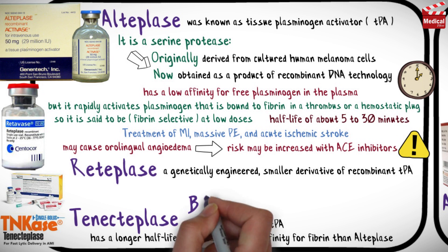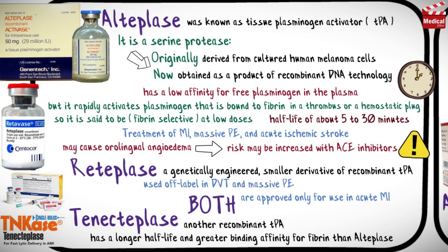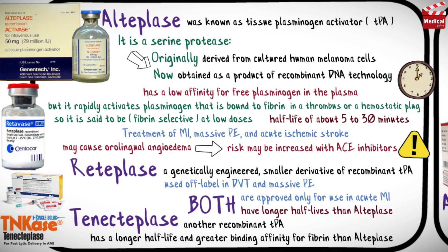Reteplase and tenecteplase are approved only for use in acute myocardial infarction. Reteplase may also be used off-label in deep venous thrombosis and massive pulmonary embolism. Both agents have longer half-lives than alteplase.